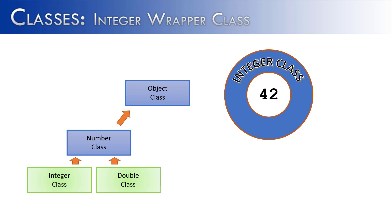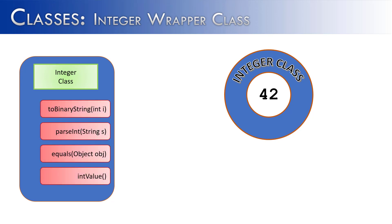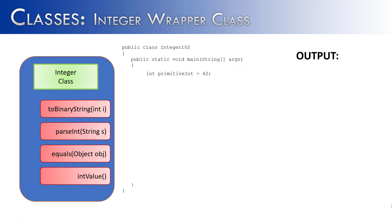Now that the primitive 42 has been wrapped inside of the integer class, it is important to see how it fits in terms of other classes related to it. The integer class actually inherits from the number class and the object class, so it's going to get methods from the object class and the number class. Let's see what some of those methods are that are either from the integer class, number class, or object class. The integer class has several methods, but I just wanted to look at a few for the sake of this video: toBinaryString, parseInt, equals, and intValue. So to start with, I've created a class called Integer102 and assigned primitiveInt to the integer value 42. Then I created an object, objInt, which takes that primitive value and wraps it with the integer class.